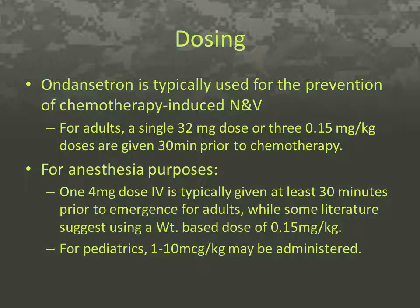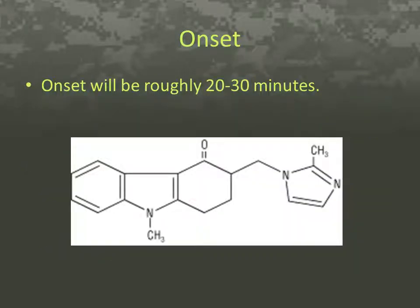Zofran initially rose to fame as an adjunct to chemotherapy. For the prevention of chemotherapy-induced nausea and vomiting, a single 32 mg dose is administered at least 30 minutes prior to the induction of the chemotherapeutic agent. For anesthesia purposes, one 4 mg dose is typically given at least 30 minutes prior to emergence. It takes approximately 20 to 30 minutes for Zofran to have its effect; therefore, administration should coincide with onset to prevent post-operative nausea and vomiting on emergence and in the recovery room.